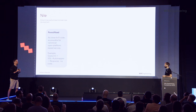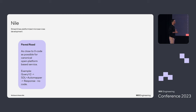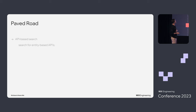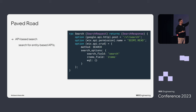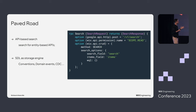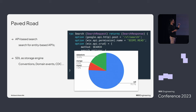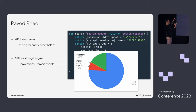The paved road for Nile and Search: search supports a variety of use cases, but in Nile-land it's API-based search — specifically, search for entity-based APIs — allowing developers to expose search capability from an API with the least effort possible. Another building block is SDL as a storage engine, which gives convention, domain events, CDC. SDL is the most popular storage solution for Nile services. This is the path and constraints we take into account to give a more optimized experience.